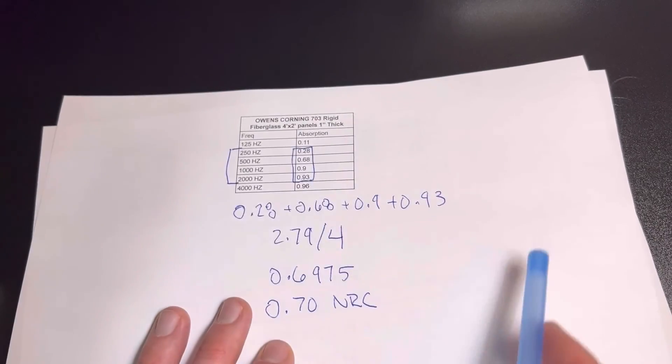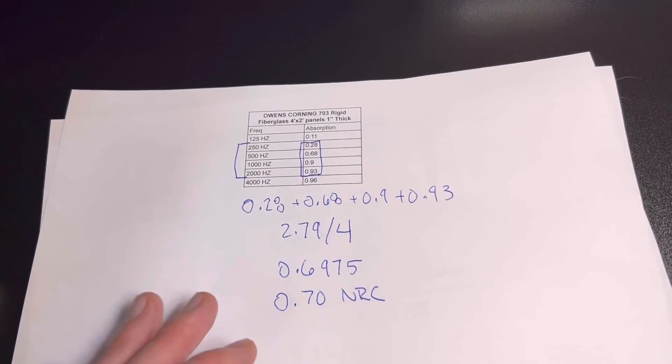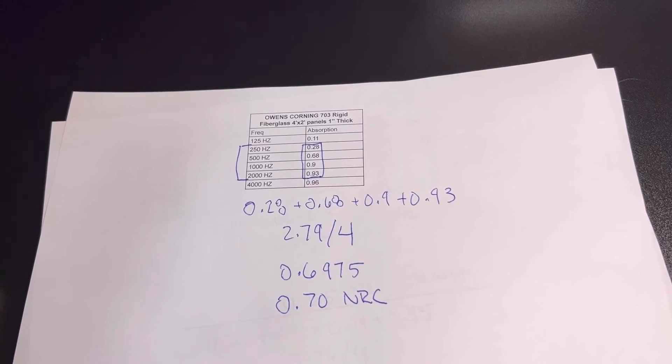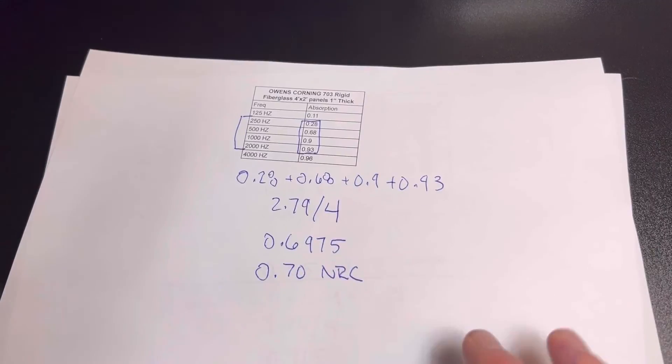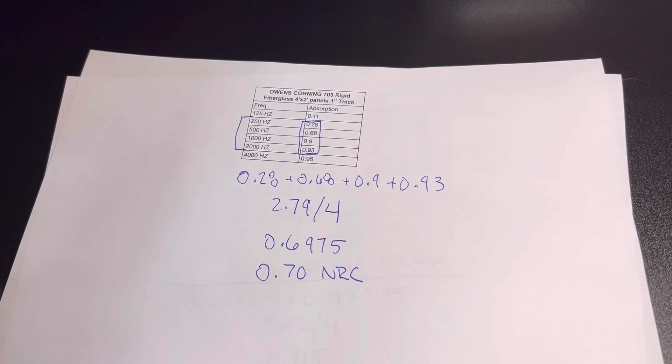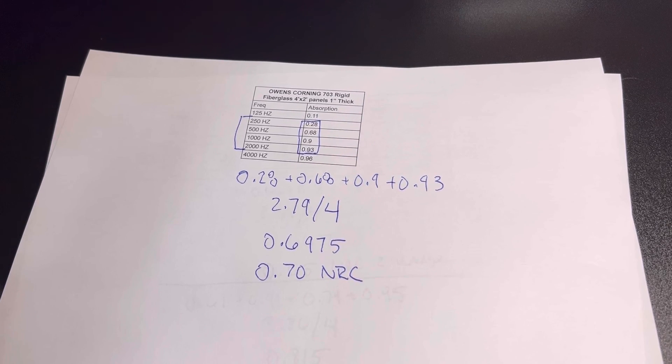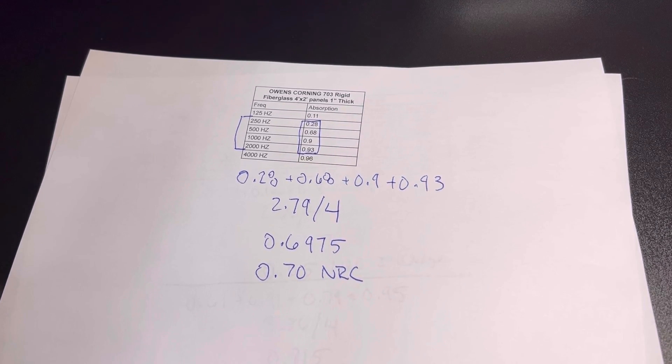So the Owens Corning fiberglass absorbs about 70% of the sound waves when the sound waves come in contact with it. That's how you calculate the NRC. If you have any questions, just reach out and let us know. We're here to help. Good luck with all your projects.